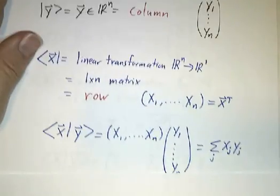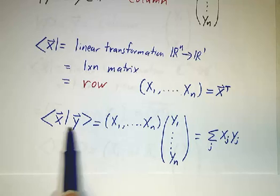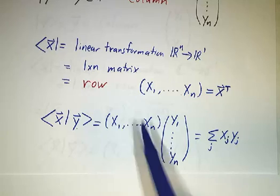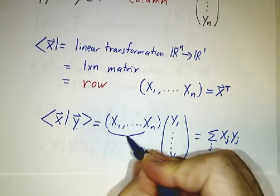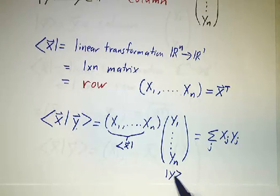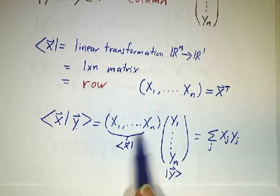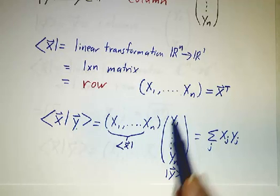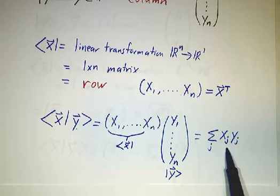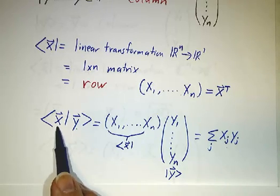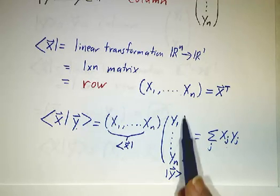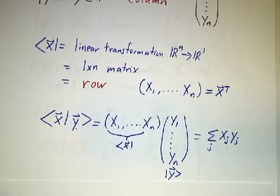Does this work? If we multiply the bra x with the ket y — here's the bra x and here's the ket y — doing the matrix multiplication of this row times this column gives x1·y1 + x2·y2 + ... + xn·yn, which is in fact the inner product of x and y. So the whole thing works. If we say that bras are rows and kets are columns, everything works.